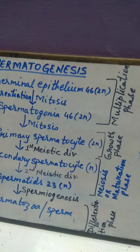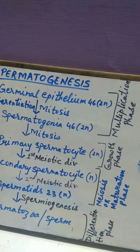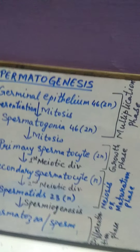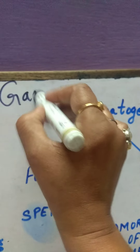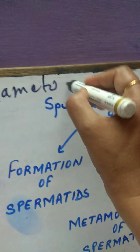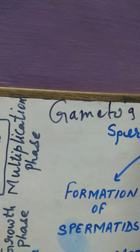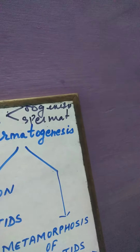Gametogenesis is controlled by gonadotropic hormone, which is secreted by the pituitary gland. Gametogenesis includes production of ova, that is oogenesis, and production of sperm, that is spermatogenesis.